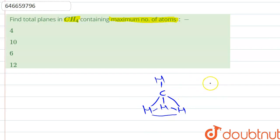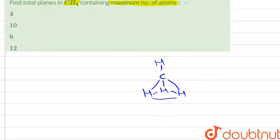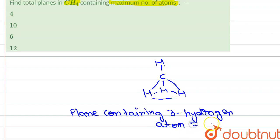The plane containing three hydrogen atoms will be equal to four. We can see from this structure that the total planes containing three hydrogen atoms equals four.